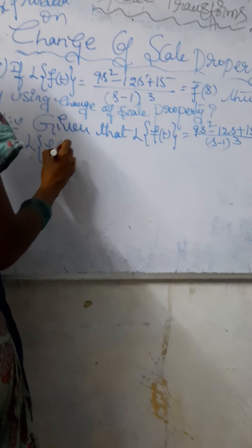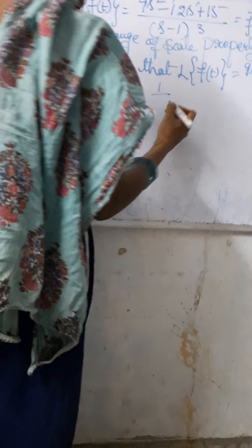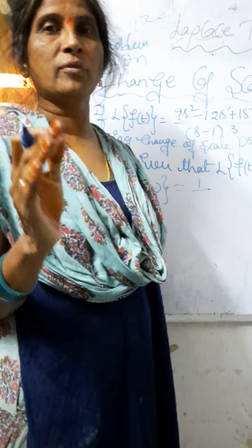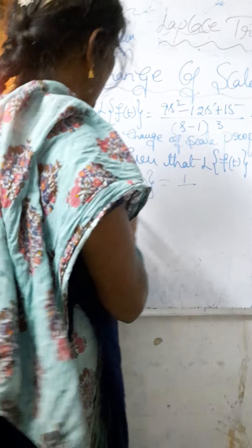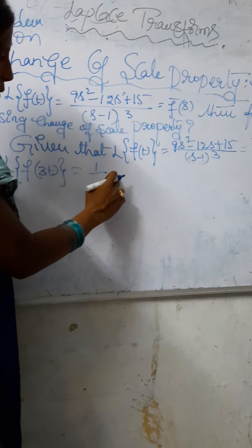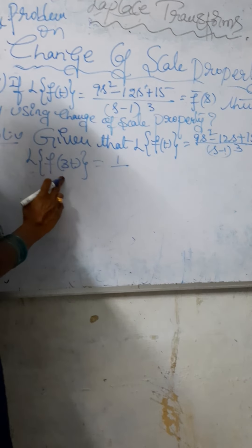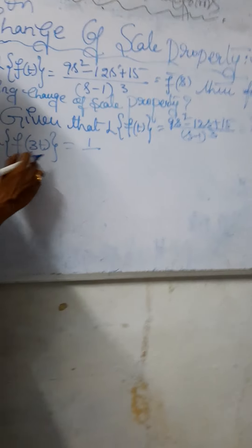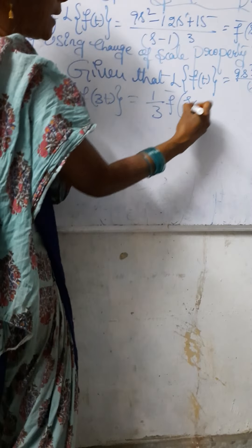Now we have to find the Laplace transform of f(3t). According to the change of scale property of Laplace transforms, L{f(at)} = (1/a) f̄(s/a). In place of a we have 3, so this gives us (1/3) f̄(s/3).